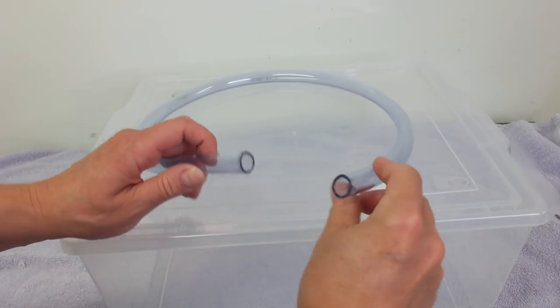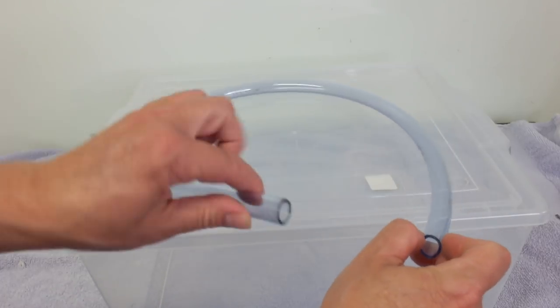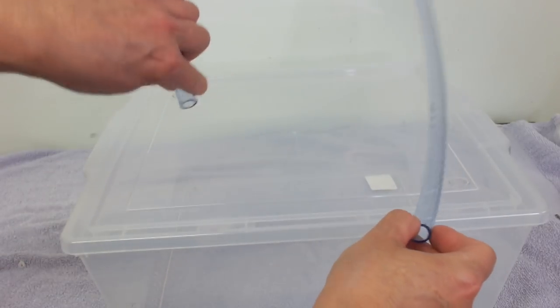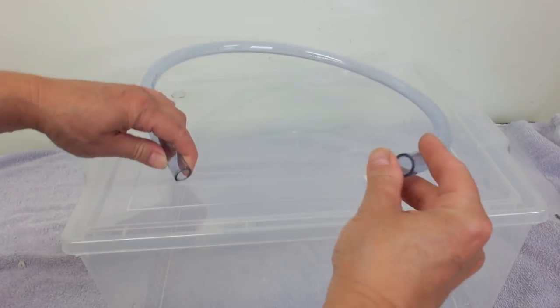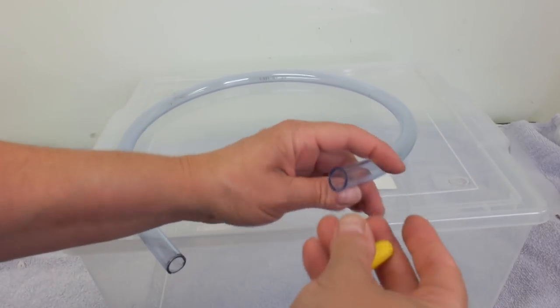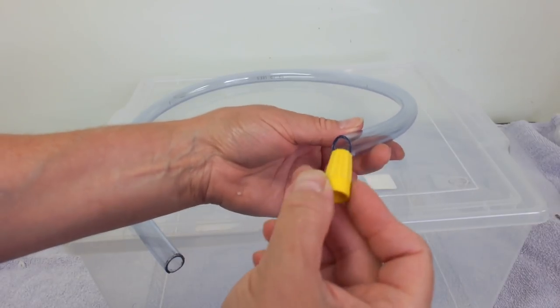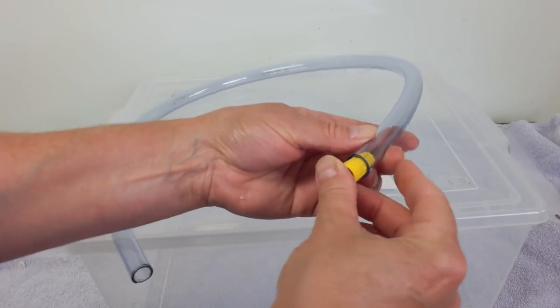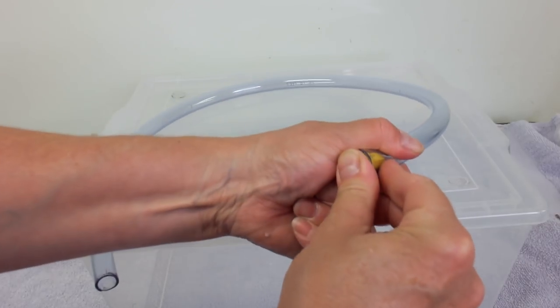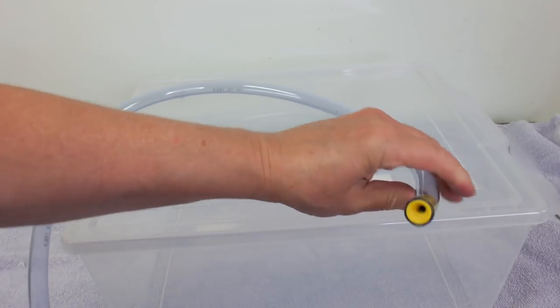All right so what I gotta do now is figure out how to block one end because this end's gonna be attached to the pump right. It's gonna be sitting up here and I gotta block this end otherwise the water will just come right out the other end. So I found this yellow wire connector and I'm gonna invert it, put it upside down and stick it right in there and then I'm gonna tie it with the tie.